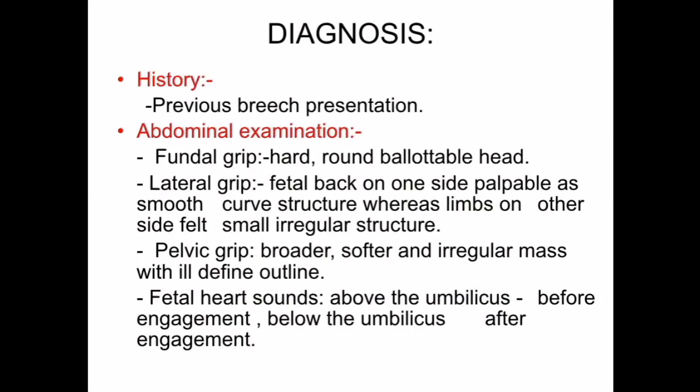On lateral grip, the fetal back on one side is palpable as a smooth curved structure, whereas limbs on the other side are felt as small irregular structures. On pelvic grip, you can palpate a broader, softer, and irregular mass with an ill-defined outline. Fetal heart sounds are auscultated above the umbilicus before engagement and below the umbilicus after engagement.